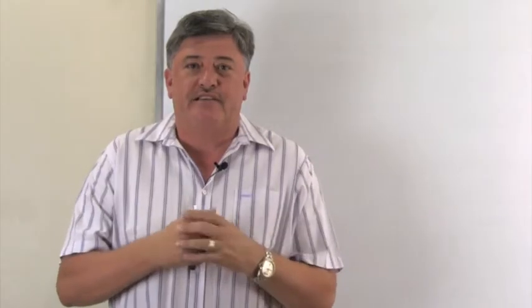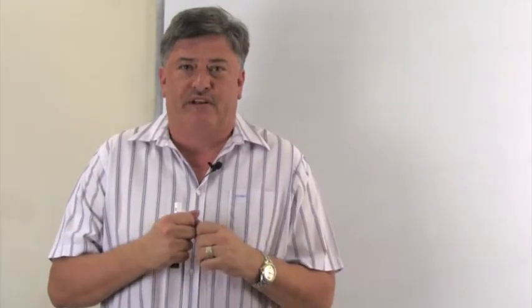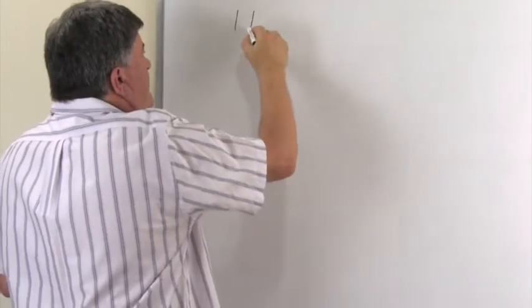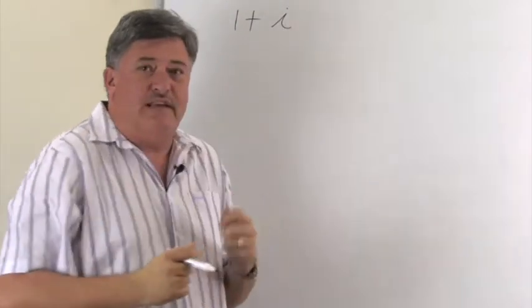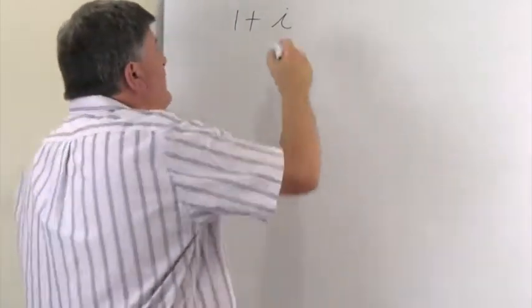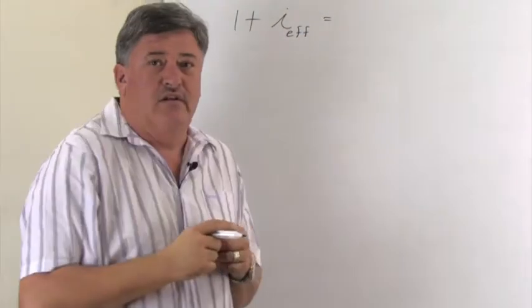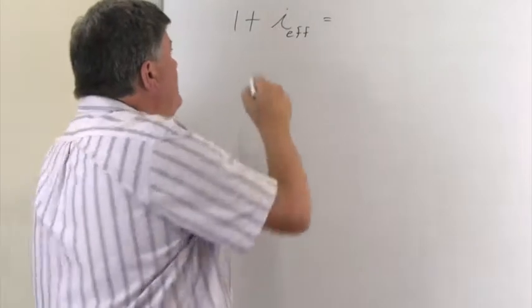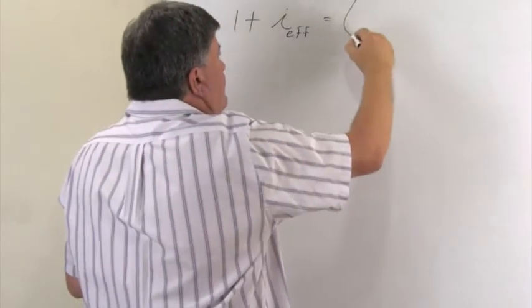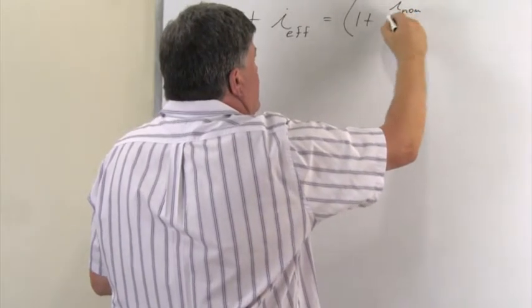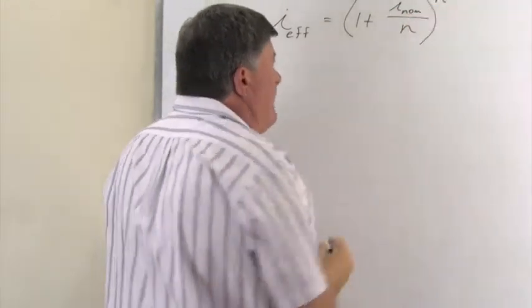To convert this nominal rate of 18% compounded monthly to the annual effective rate, we first of all need to look at the formula. Our formula for this conversion is 1 plus i, and you'll remember i represents our interest rate normally. And this one is the effective one, so that's why we do that little effective subscript there. So 1 plus i effective is equal to 1 plus i nominal over n to the power of n.